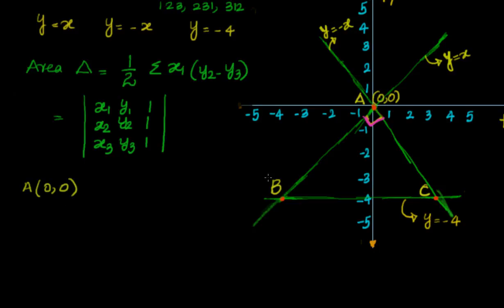Let's go to the next, B. B is nothing but the point of intersection of y equal to x and y equal to minus 4. I have directly minus 4, y equal to minus 4, so I can use it. y equal to x, so x is also equal to minus 4.